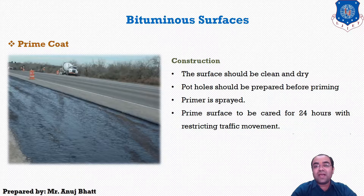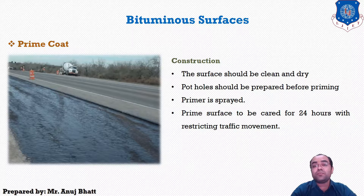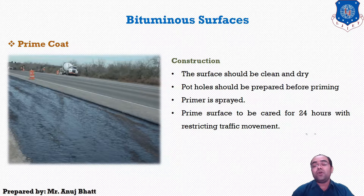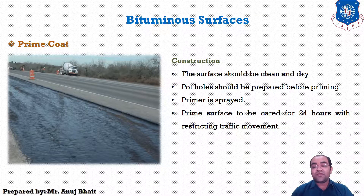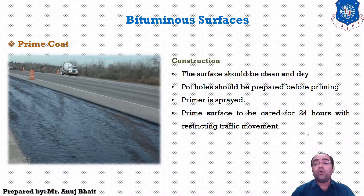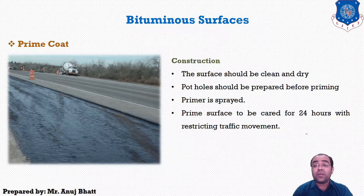When a bituminous surface has to be laid on an absorbent or porous surface such as water-bound macadam, a bituminous prime coat must first be laid prior to the superimposed layer. The objective of the prime coat is to block the capillary voids in the surface and to harden the surface by binding dust and loose particles. The prime coat consists of low-viscosity liquid bituminous material such as cutbacks.